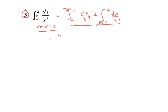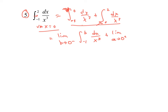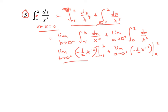We're splitting it over that vertical asymptote. We'll have a problem when x = 0, so we need a limiting process. We write: limit as b → 0⁻ of the integral from -1 to b of dx/x³, plus limit as a → 0⁺ of the integral from a to 2 of dx/x³. Taking the antiderivatives and evaluating: we plug in b and -1 for the first piece, and 2 and a for the second piece.